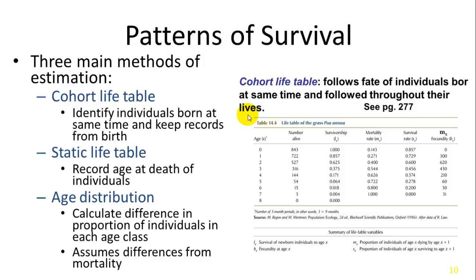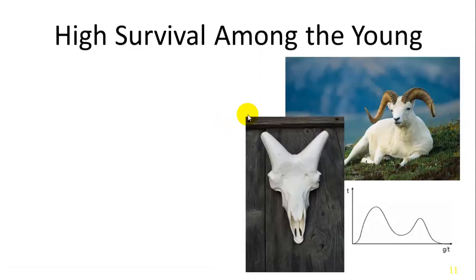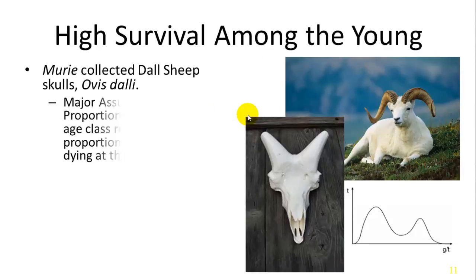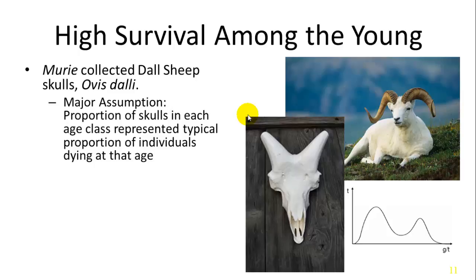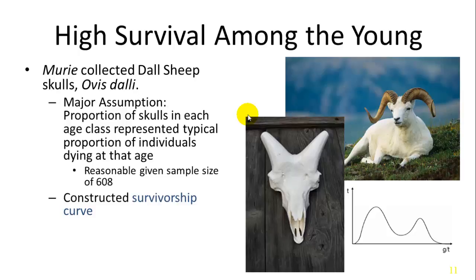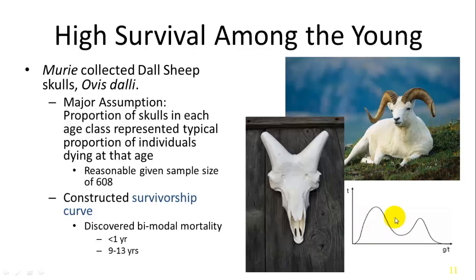A researcher named Murid collected Dall sheep skulls (Ovis dalli). The major assumption was that the proportion of skulls in each age class represented a typical proportion of individuals dying at that age. With a sample size of 608 skulls, he constructed a survivorship curve and found a bimodal mortality rate: many died within the first year, then survived until a later period, and between 9 and 13 years they died at a higher rate again.